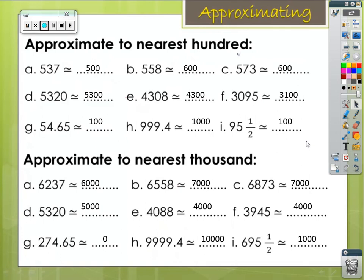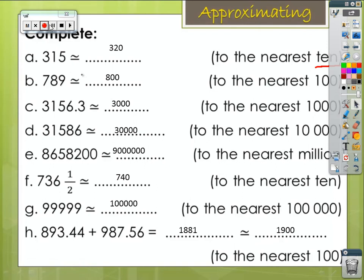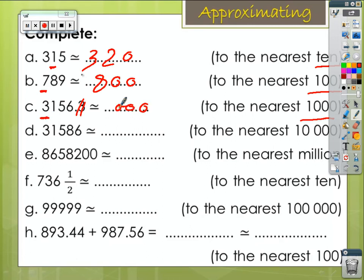Here's the answer. The next page: approximate to the nearest ten — our target digit is the tens digit. In the first letter, 5 is equal to 5, so increase 1 by 1 — going to be 320. The second: approximate to the nearest hundred — target digit is the hundreds digit; 8 is greater than 5, so increase 7 by 1 — it will be 800. Approximate to the nearest thousand: don't use the decimal number; the thousands digit is 3; 1 in the hundreds is less than 5, so 3 will keep its value.